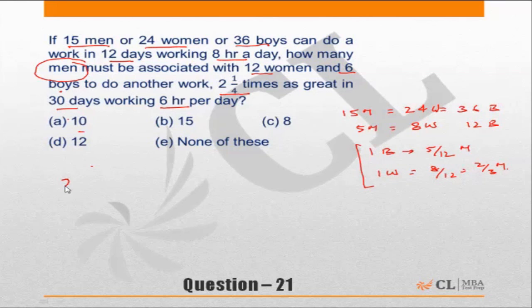We can convert everything in terms of number of men using this relationship. Let's say the number of men is x. How many men must be associated with 12 women and 6 boys? 12 boys are equivalent to 5 men, so 6 boys should be equivalent to 2.5 men. Similarly, 8 women are equivalent to 5 men, so 12 women must be equivalent to 7.5 men. We have x men, so the total number of men effectively is x plus 10, where x reflects the actual number of men and 10 reflects the equivalent number of men for 12 women and 6 boys.